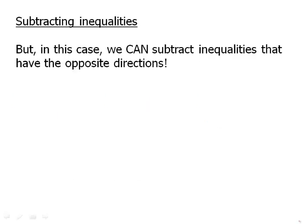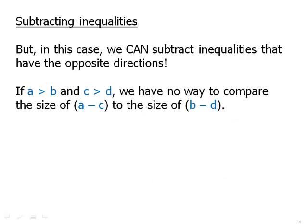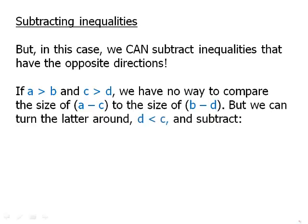But in this case, we can subtract inequalities that have opposite directions. So if a is greater than b and c is greater than d, we have no way to compare the size of a minus c to the size of b minus d. If we do big minus big and small minus small, well, it's hard to say how that's going to compare. But we can turn the latter around, make it d minus c, and then we can subtract. a minus d is greater than b minus c. So in other words, big minus small is always going to be greater than small minus big. So this works.